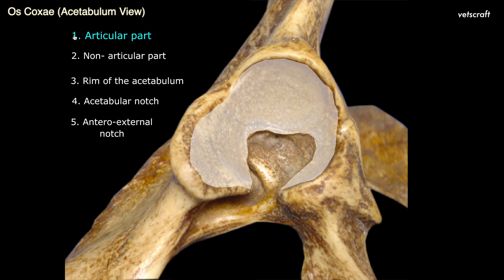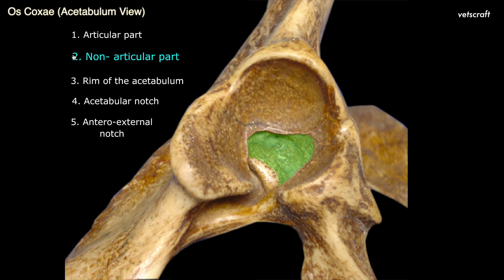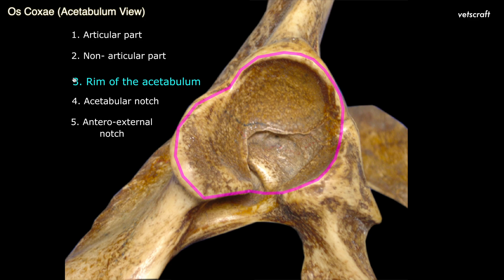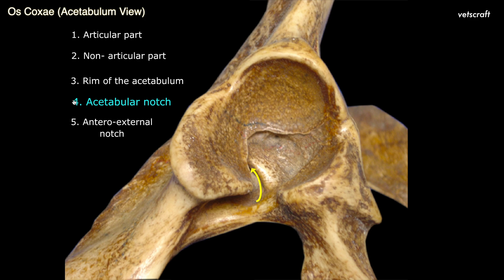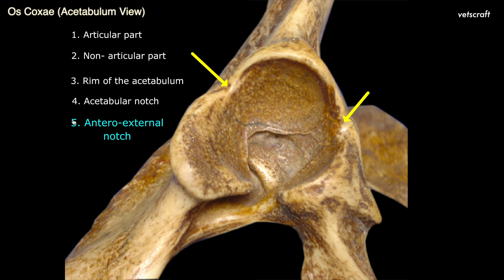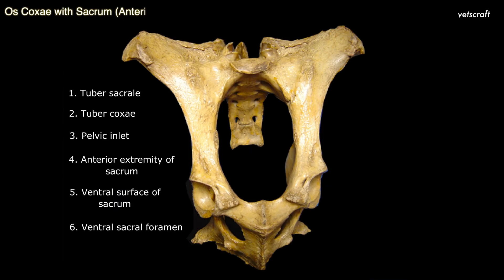Note the articular portion of the acetabulum, which articulates with the head of the femur. The non-articular part of the acetabulum is named the acetabular fossa. The acetabulum is surrounded by a rim to which a ring of fibrocartilage is attached. The acetabular notch is a non-articular depression arising from the acetabular fossa for the passage of the round ligament of the hip joint. Arrow indicates the small antero-external notches on the rim of the acetabulum.